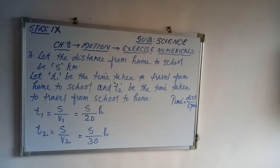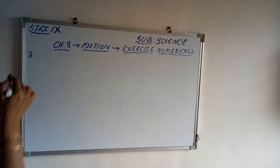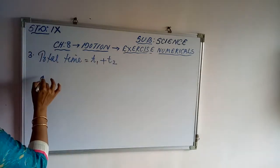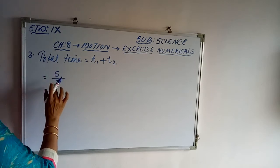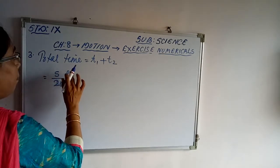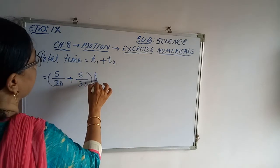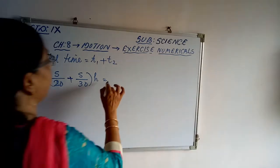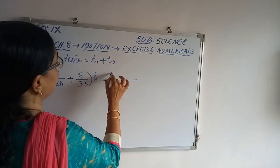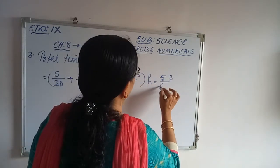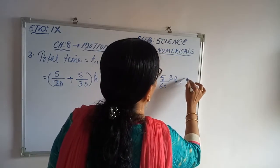Total time equals T1 plus T2 = S/20 + S/30. Taking LCM of 60: that is (3S + 2S)/60 = 5S/60 = S/12. So the total time is S/12 hours.